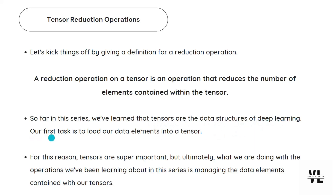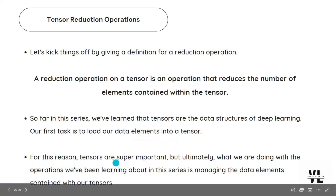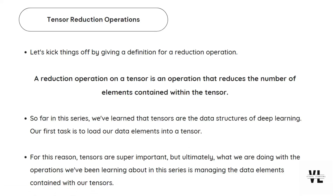Our first task is to load our data elements into a tensor. For this reason, tensors are super important, but ultimately what we're doing with the operations we've been learning about in this series is managing the data elements contained within our tensors. Basically, a reduction operation is just reducing the number of elements contained within a tensor. This kind of operation performs some kind of arithmetic computation behind the scenes, but its basic task is just to reduce the number of elements within a tensor. This is the name reduction operation.